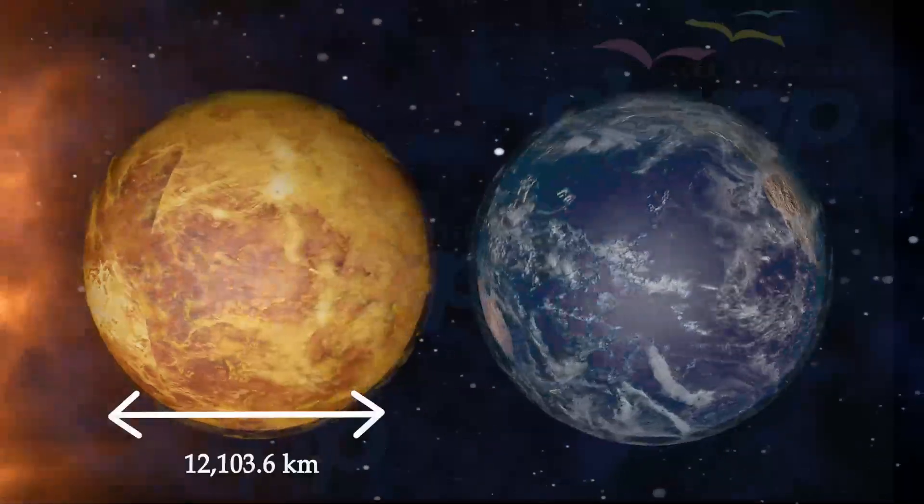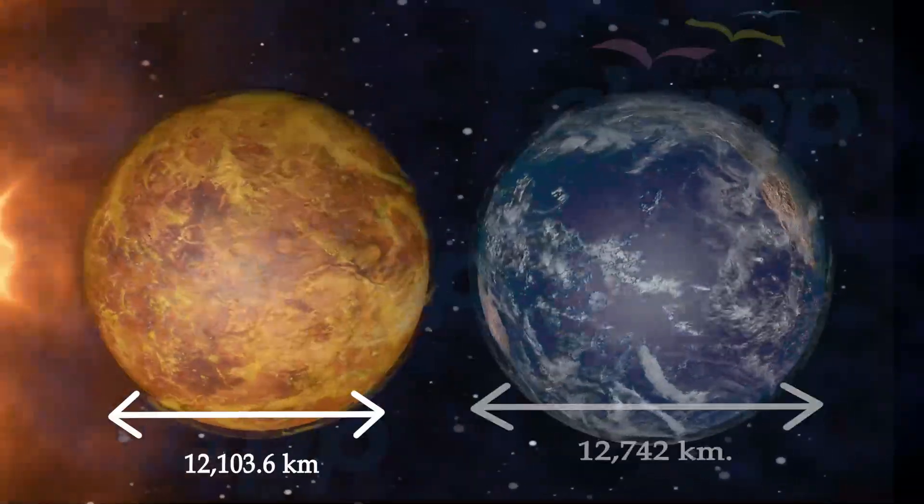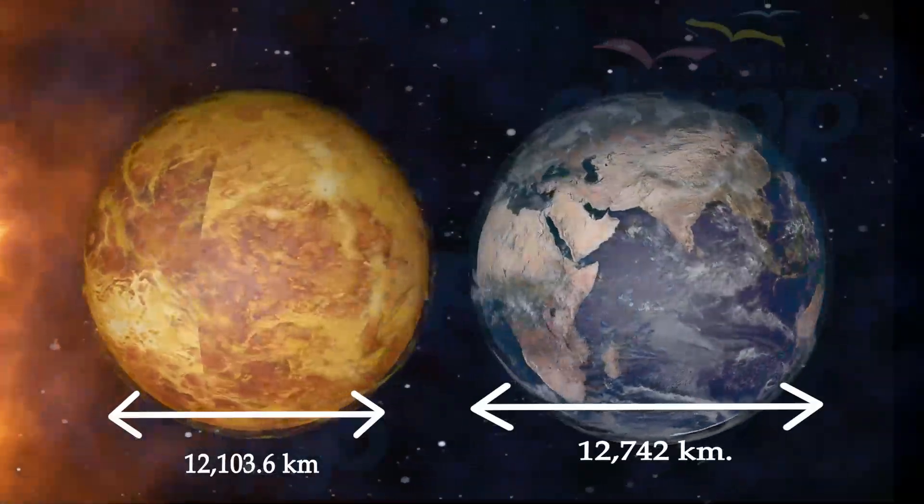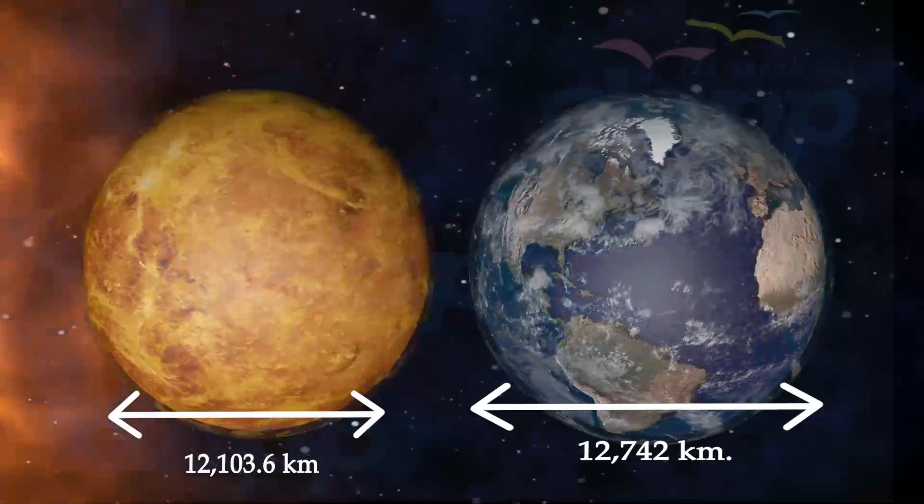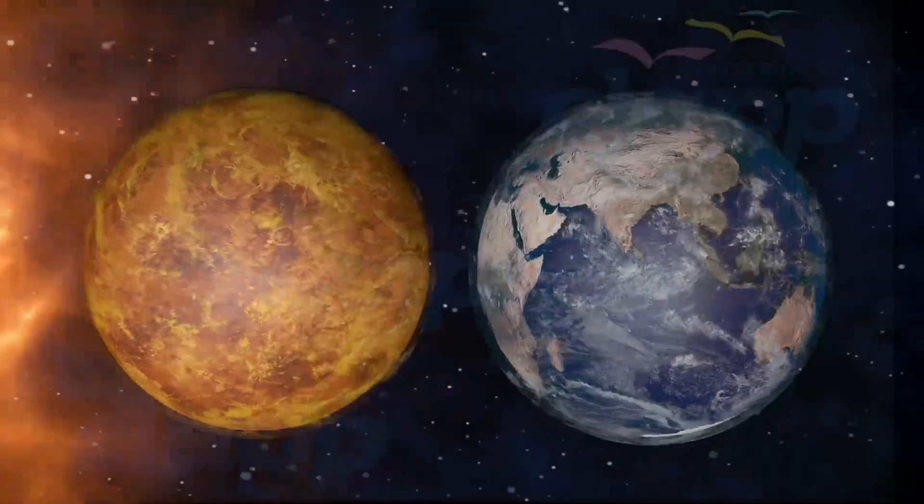The diameter of Venus is 12,103.6 km, only 638.4 km less than Earth's, and its mass is 81.5% of Earth's.